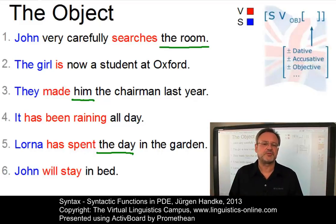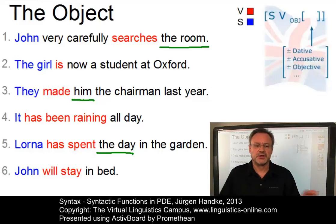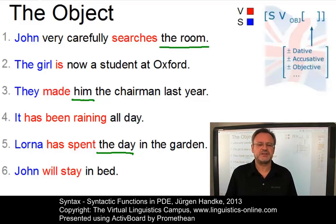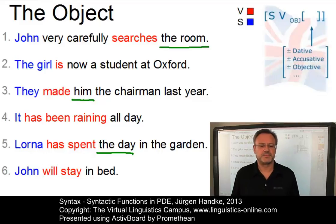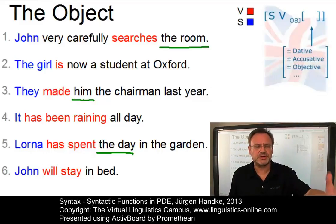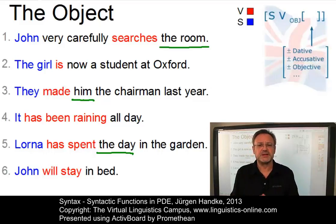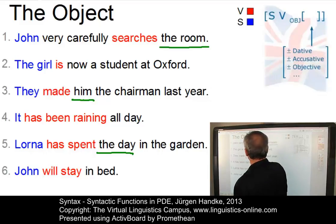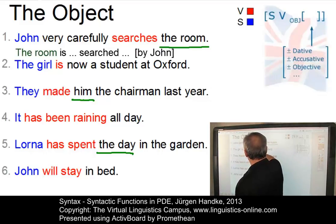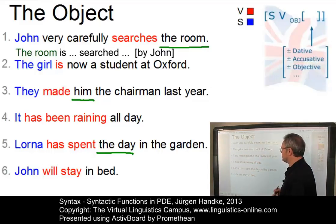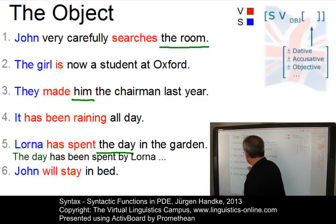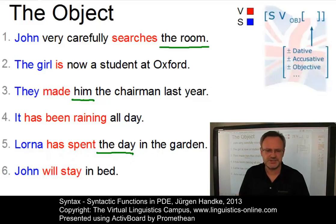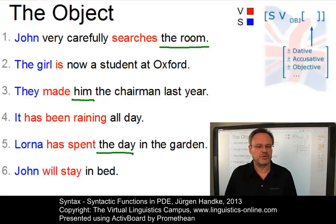Like the subject, the object is typically a noun phrase or a nominal clause. In standard simple declarative sentences, the object normally follows the subject and the verb — this is true for all three cases. The object of an active clause usually becomes the subject of the corresponding passive, which is a useful discovery procedure. So if you passivize sentence number one: The room is searched very carefully by John. Take number three: He was made the chairman. Or number five: The day has been spent by Lorna. In each case, the object becomes the subject of the corresponding passive.